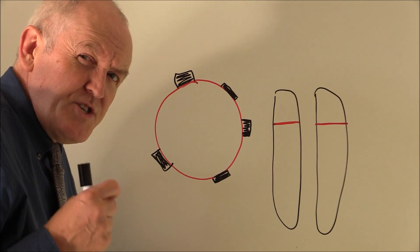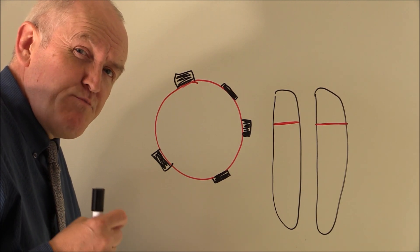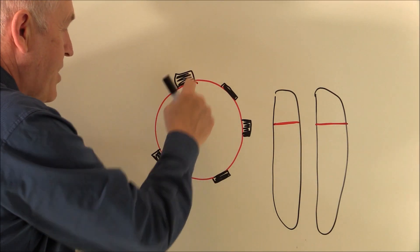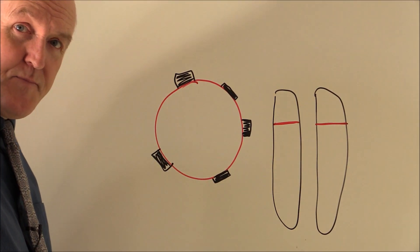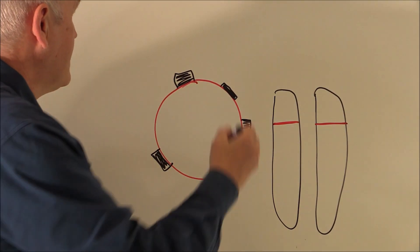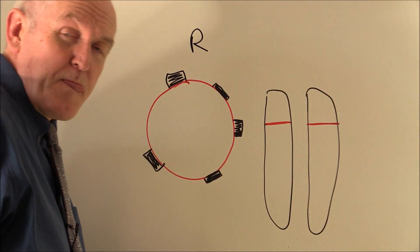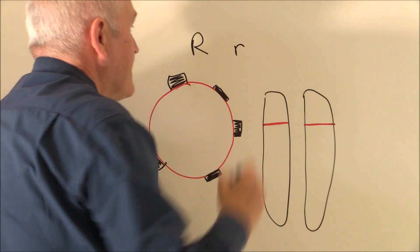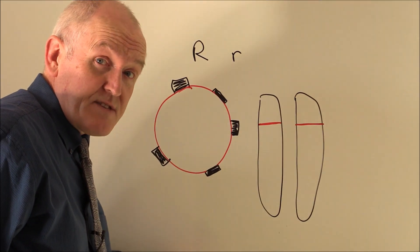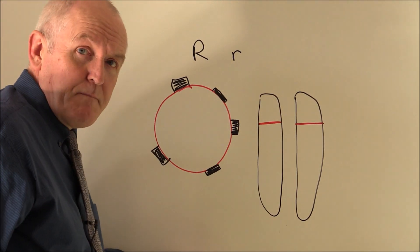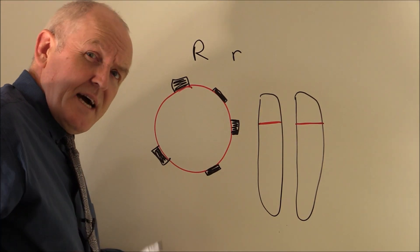Now a dominant gene is one which will be expressed if present. And the Rhesus factor is coded for by a dominant gene. So by convention, we denote dominant genes as a capital letter. And the recessive gene, which would result in no Rhesus factor being present, we represent with a lowercase r.